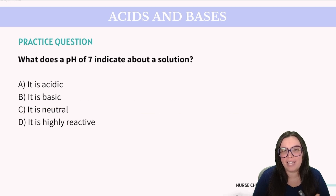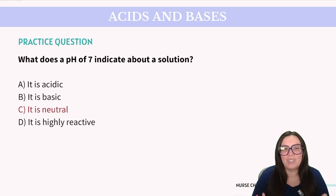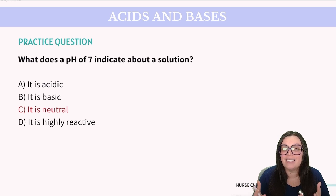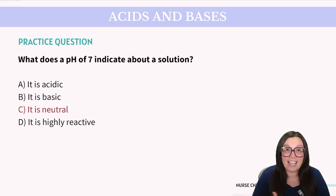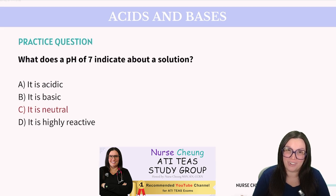Question: What does a pH of 7 indicate about a solution? Is it acidic, basic, neutral, or highly reactive? The correct answer is C — neutral. A pH of 7 is considered neutral, indicating that the solution is neither acidic nor basic, and we see this most commonly with pure water.